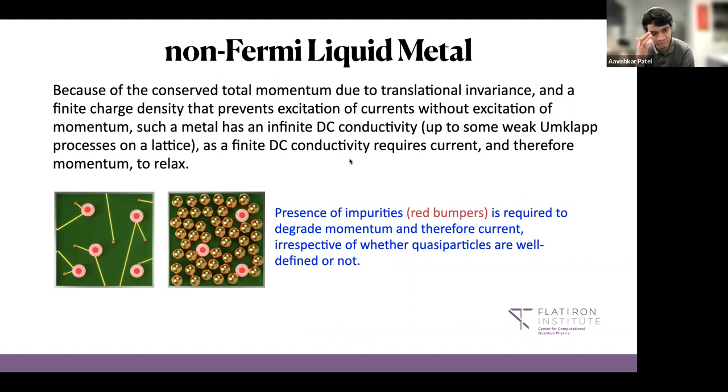Up to umklapp processes that would occur if you put it on a lattice which would give a T-square resistivity at best. So there's no way you can get T-linear resistivity out of this.